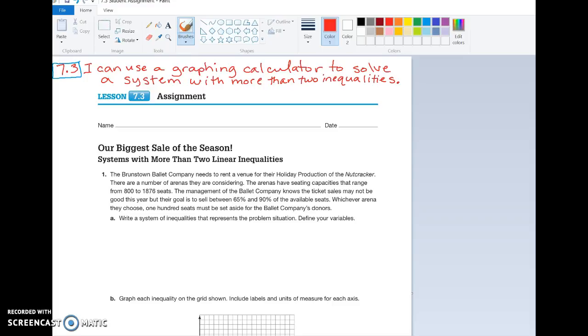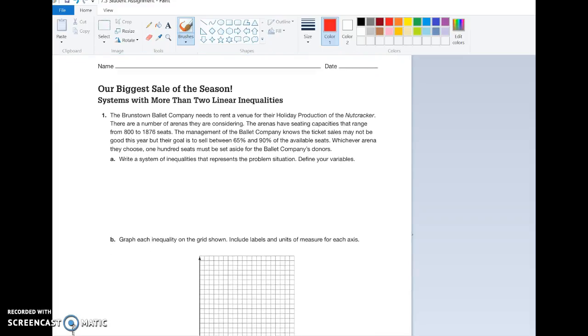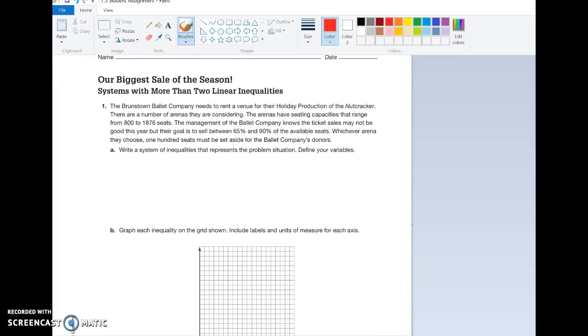Now let's go ahead and read our problem. It says the Brunstown Ballet Company needs to rent a venue for their holiday production of the Nutcracker. There are a number of arenas that they are considering. The arenas have seating capacities that range from 1,800 to 1,876 seats. The management of the ballet company knows that ticket sales may not be good this year, but the goal is to sell between 65% and 90% of the available seats. Whichever arena they choose, 100 seats must be set aside for the ballet company's donors.